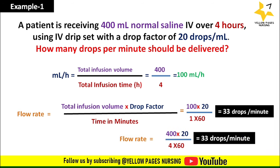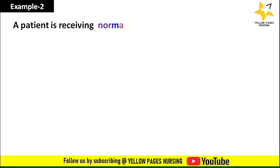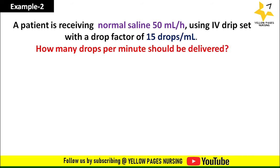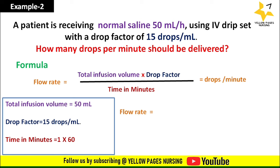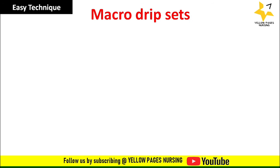Example two: a patient is receiving normal saline 50 ml per hour using an IV set with a drip factor of 15 drops per ml. How many drops per minute should be delivered? The infusion volume is clearly mentioned as 50 ml per hour. Applying the formula: (50 × 15) ÷ (1 × 60) = 12.5 drops per minute, which we round to 12 drops per minute.